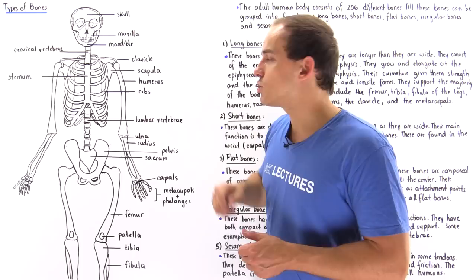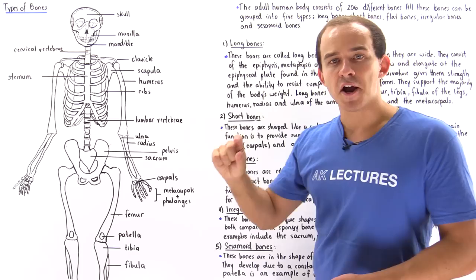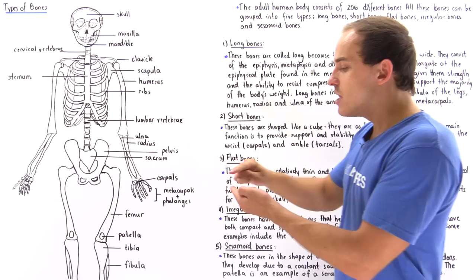Long bones can actually be very long or very small. The defining characteristic of a long bone is that they are much longer than they are wide.